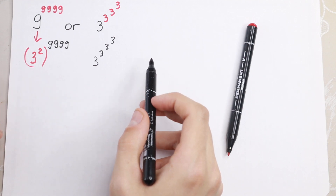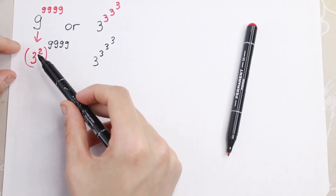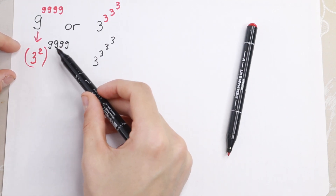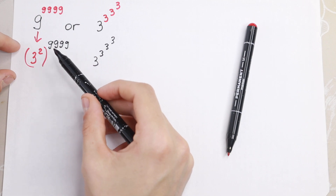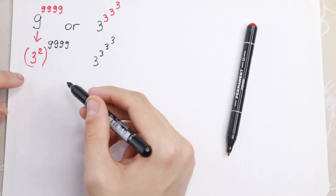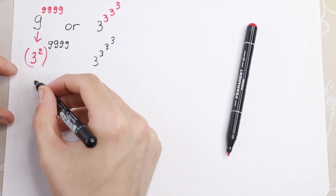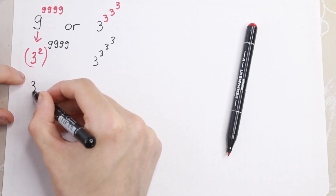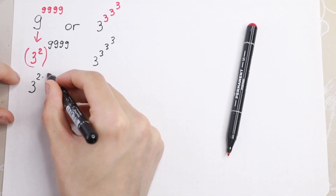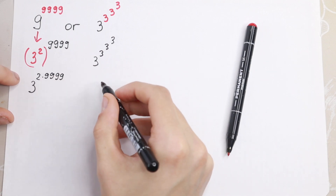What we're going to do next? We all know that when we raise a power to a power, we multiply the exponents. So on the left we will have 3 to the power 2 times 9^(9^9).